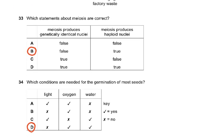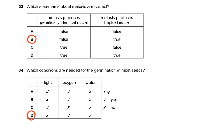Question 33 asks which statements about meiosis are correct. Meiosis produces genetically identical cells — no, that's wrong. Meiosis produces haploid nuclei — yes, that's correct. Meiosis is a reduction division that reduces the number of chromosomes by half. In the gametes produced by meiosis, you only have one of each pair of chromosomes.